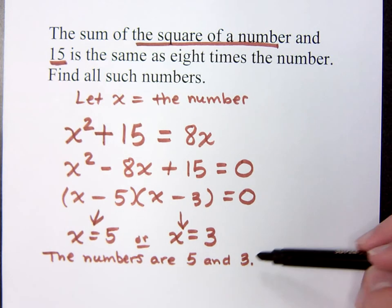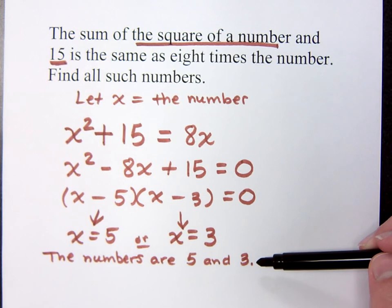So, you solved this. You said the numbers are five and three. We found the numbers. Are we happy?